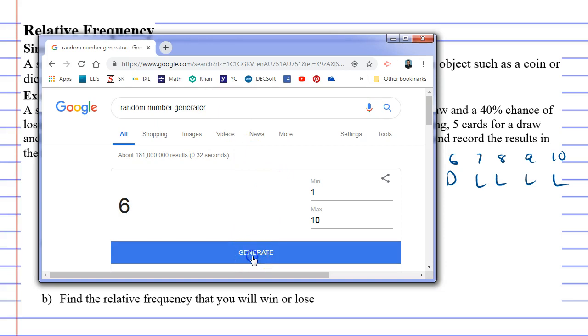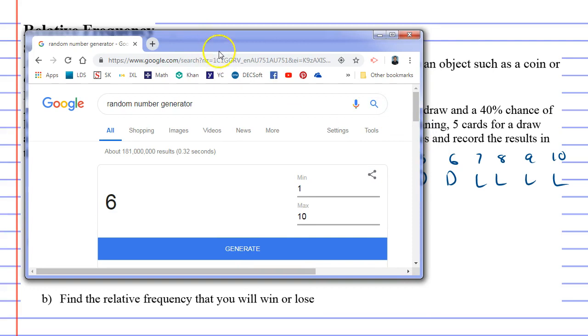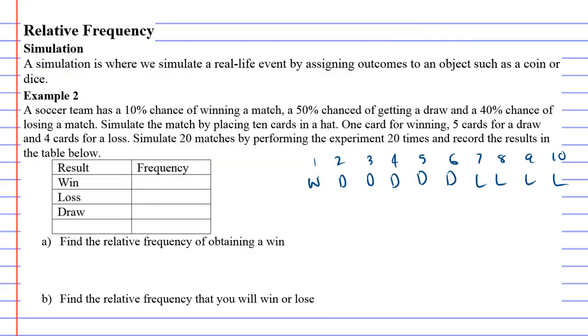We get the number 6, which is a draw. Now I'm just going to get this out of the way. So we've got a draw and we'll put a little tally mark for a draw.